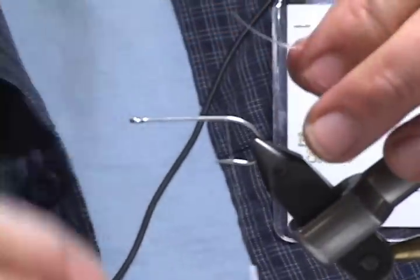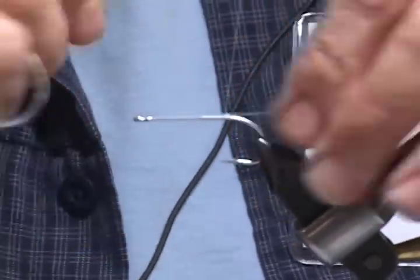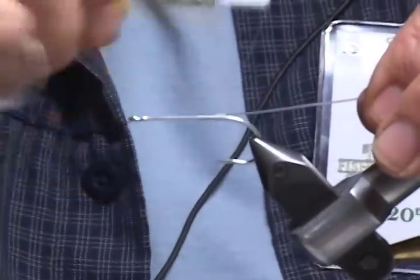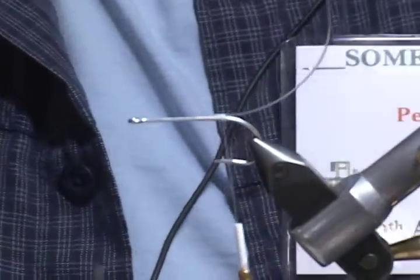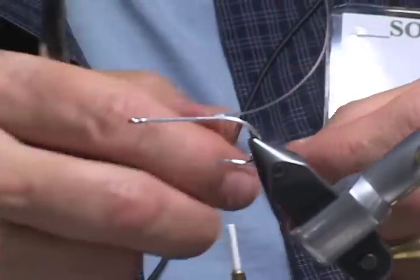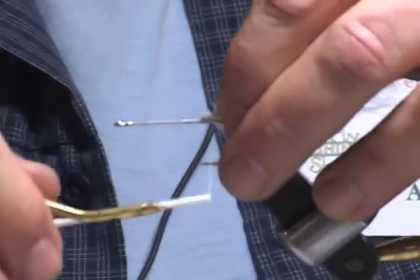This is 20 pound hard mason mono. Tie that on, the hook coming out the back. Clip it. Take your piece of rabbit, that ties in right on top of the hard mono.